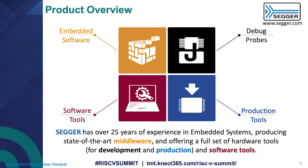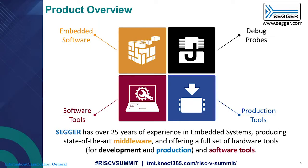First is embedded software — that's the software that goes into the target, like the RTOS and the middleware. We also have embedded software tools like the IDE and debugger. Then of course we do debug probes — a lot of you have probably used a Segger J-Link before, so we're pretty well known for that. The fourth pillar is production tools and production programmers, which are used for high-volume production once the project is done.